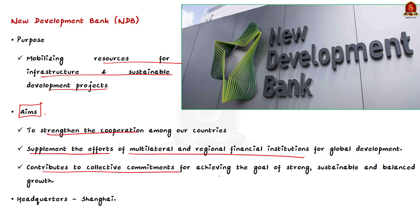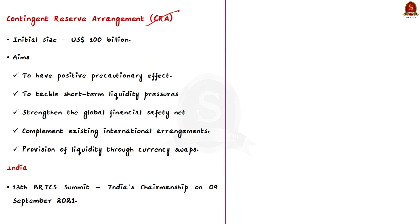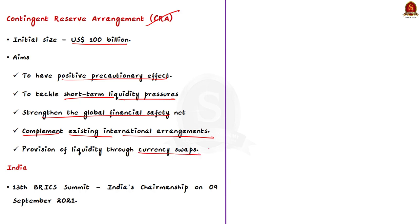The New Development Bank contributes to the collective commitments for achieving the goal of strong, sustainable and balanced growth. The bank was established with an initial authorized capital of $100 billion US dollars and its headquarters is located in Shanghai, China. The BRICS Contingent Reserve Arrangement, that is the CRA, was also established with an initial size of $100 billion US dollars. This arrangement aims to have a positive precautionary effect — it helps countries tackle short-term liquidity pressures, promotes further BRICS cooperation, and helps strengthen the global financial safety net and complement existing international arrangements. The agreement has the provision of liquidity through currency swaps to avoid short-term balance of payments pressures.